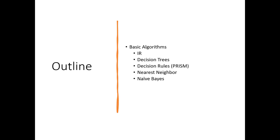These five algorithms are coming from five different paradigms, which gives you an idea of what the classical machine learning algorithms are. The first one we are going to discuss today is the PRISM algorithm which generates a rule set. The fourth one is the nearest neighbor algorithm, and the final one is Naive Bayes, which is a probability-based algorithm.